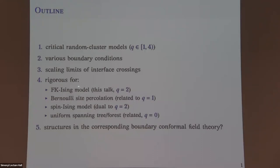The rigorous main result of today is for the FK Ising model, which is the Q equals 2 random cluster model. One can also prove similar results for percolation, but in a slightly different setup with site percolation on a triangular lattice, because we need convergence of interfaces — which requires techniques like finding a holomorphic observable, not available for all situations. For the general critical range, maybe Q from 0 to 4, these formulas are conjectural. There are also results for the spin Ising model, which I will not discuss, and I'll mention the UST case as well.